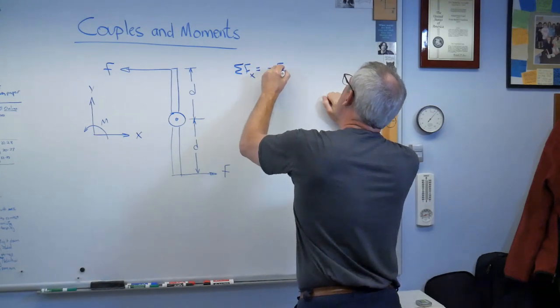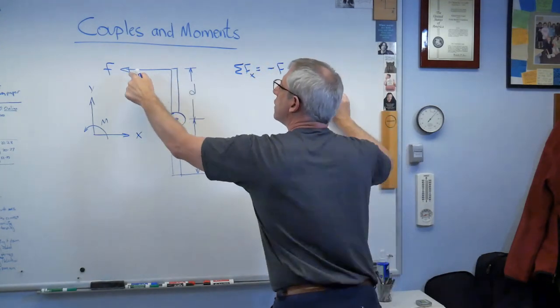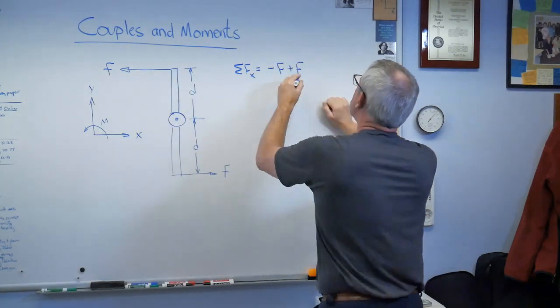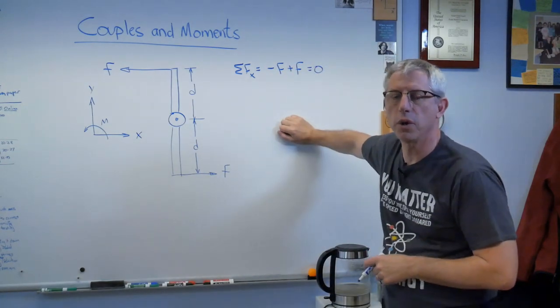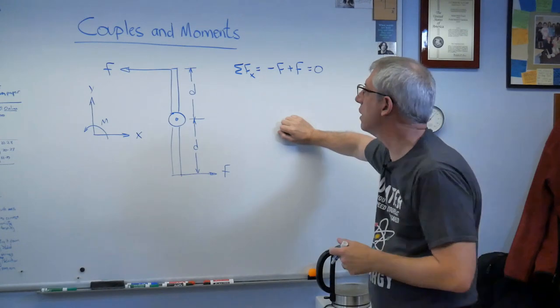So, minus f plus f, okay, that's in the negative direction, that's in the positive direction. That equals zero. So this system of two forces can't make a motion. They cancel each other out.